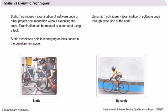Let us take an example to explain this better. When you want to buy a cycle, you would first want to examine it physically to see if it has all the parts fitted together in the right way and it doesn't have any scratches. This can be called static testing techniques. Then you would ride the bicycle on a plain surface.